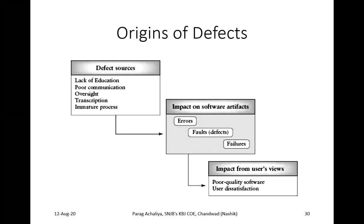Let me explain poor communication. Suppose the developer is going to collect requirements from the customer. The customer will tell five things to the developer; the developer will work on four things and actually develop three things. This is what poor communication or communication gap between developer and customer means — the customer's need will not be fulfilled.